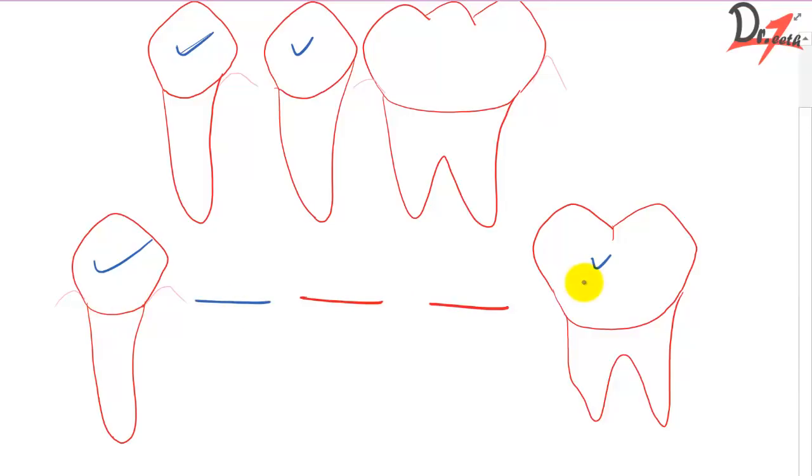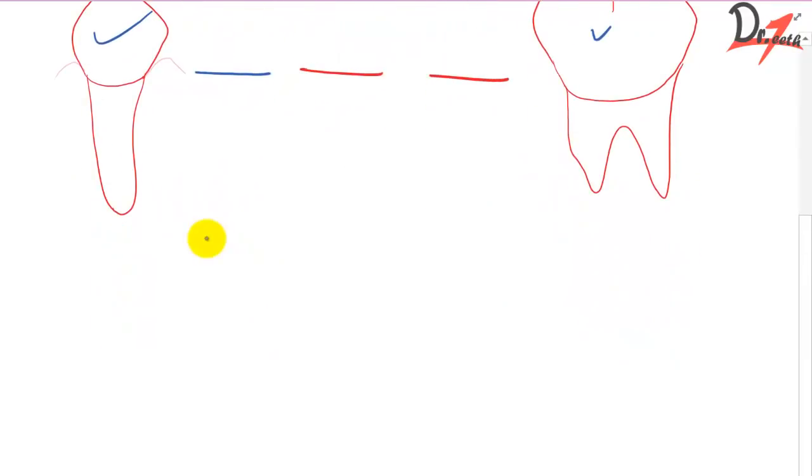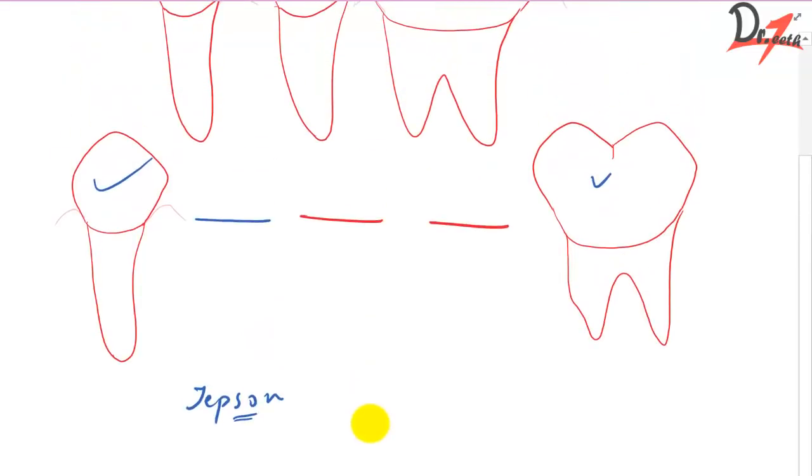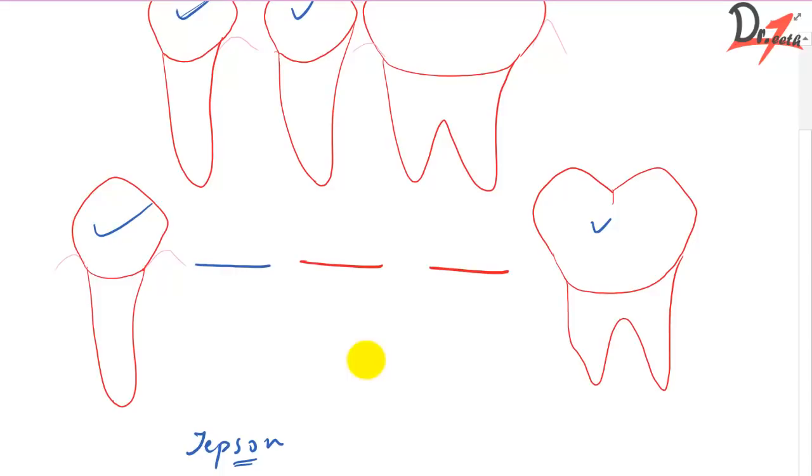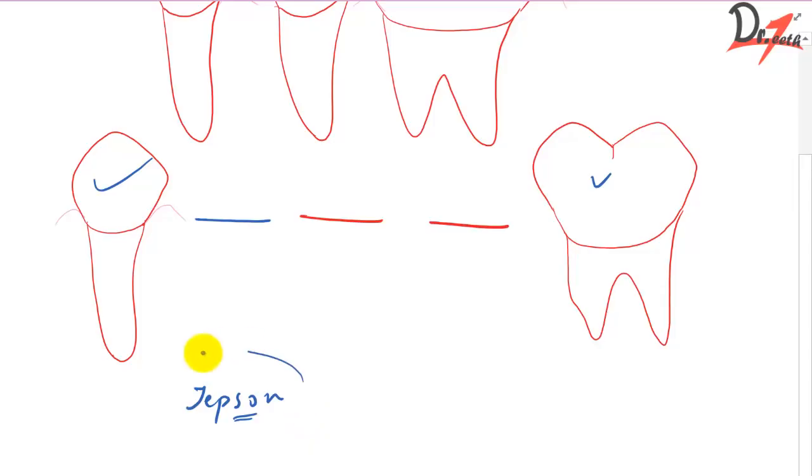So I said one term pericemental area. What do we understand by that term? So we have a mathematical calculation which was given by Jepson and it calculated or it gave the average values of the root surface of the permanent teeth.